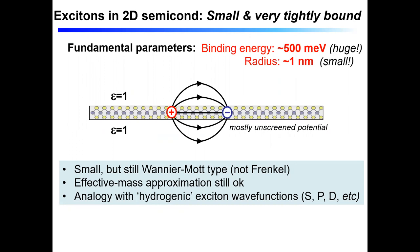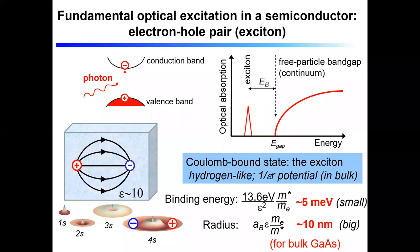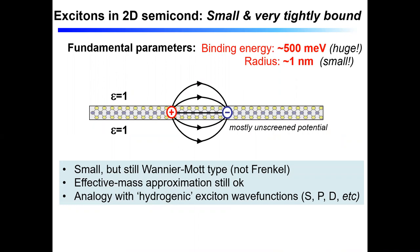In stark contrast to conventional semiconductors, in these 2D monolayer semiconductors, exciton states are very small and very tightly bound. The binding energy of an exciton in a monolayer semiconductor is huge — hundreds of milli-electron-volts — compared to only 5 meV in GaAs: a hundred times bigger. Correspondingly, the size of these things is only about a nanometer or so. The reason is that in a 2D suspended membrane, the electric field lines connecting the electron and hole live mostly outside the material — out in the vacuum — so it's mostly an unscreened potential and hence a big binding energy.